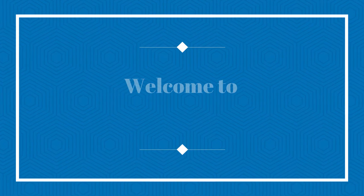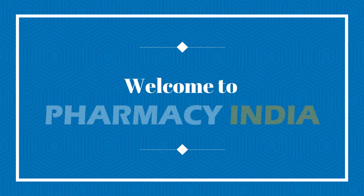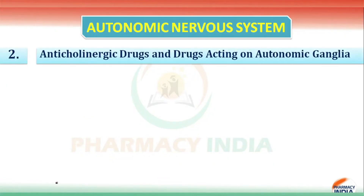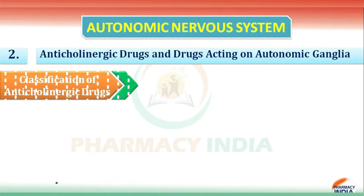Hello students, welcome to Pharmacy India. Today in this video we are going to discuss the second classification of the autonomic nervous system — that is anticholinergic drugs and drugs acting on autonomic ganglia.